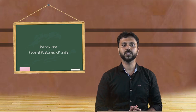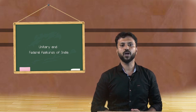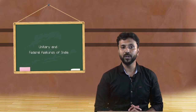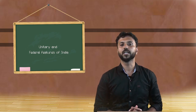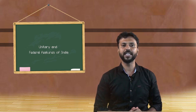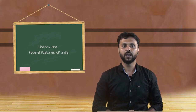Another unitary feature is the control of the union over states in certain cases. Each state of the Indian union has been assigned the duty to exercise its executive authority in a manner that ensures compliance with union laws. Regarding interstate rivers or river valley disputes — such as disputes between Karnataka and Tamil Nadu or Kerala — these can be handled by the union parliament, which has the power to provide by law for the adjudication of any dispute with respect to the use of water of any interstate river or river valley.